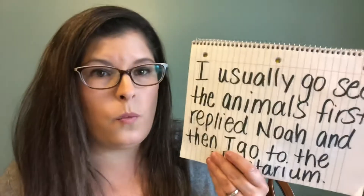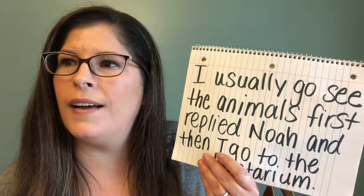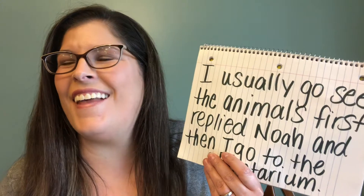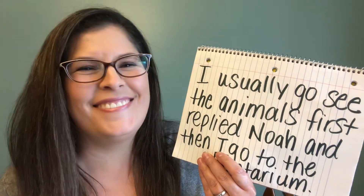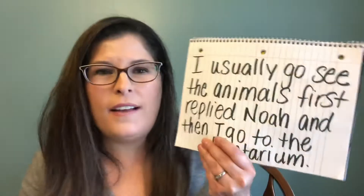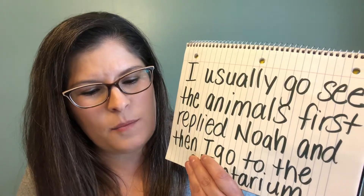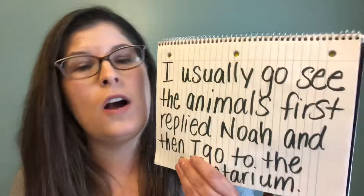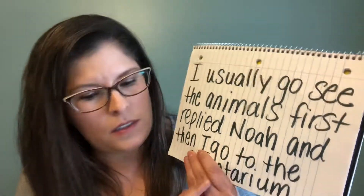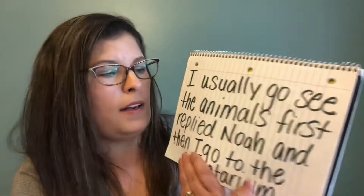Number two: 'I usually go see the animals first, replied Noah, and then I go to the planetarium.' Let's find the dialogue tag. Who is talking? It's Noah — 'replied Noah' is our dialogue tag, and it appears in the middle of the sentence.